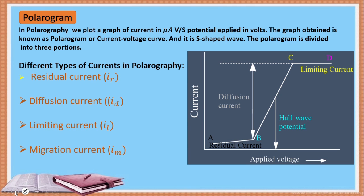What is a polarogram? In polarography, we can plot a graph with current on the Y-axis (in microamperes) versus applied potential on the X-axis. The graph obtained is known as a polarogram — we can also call it a current-to-voltage curve.